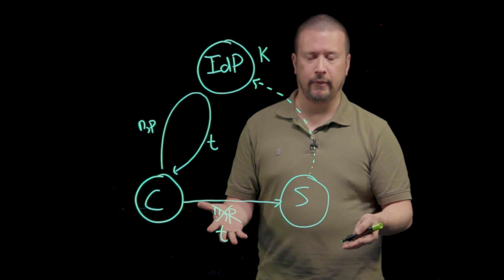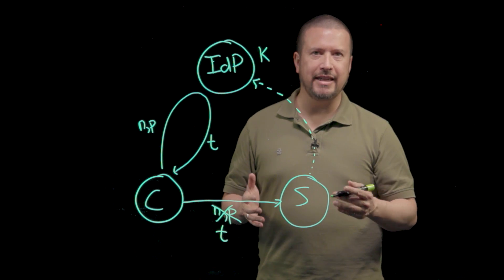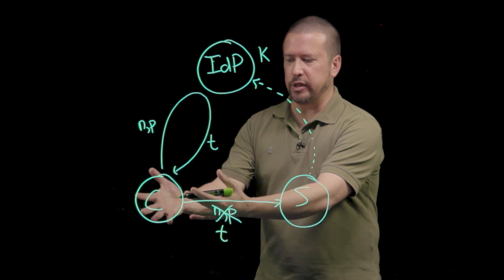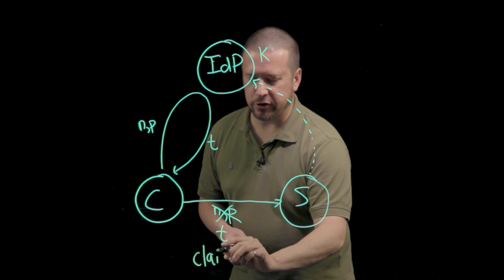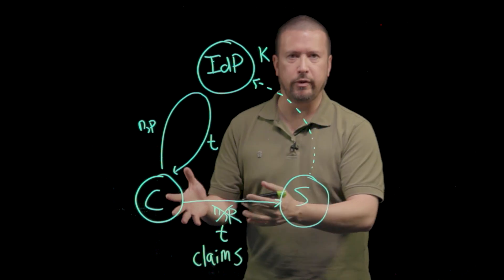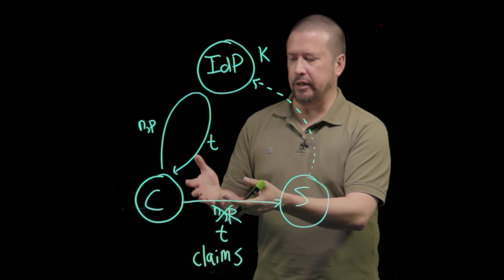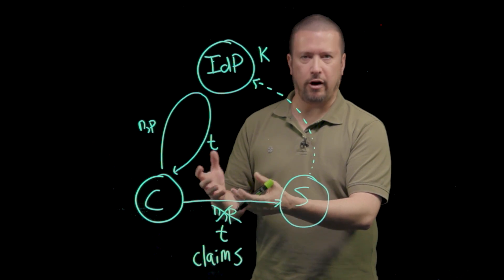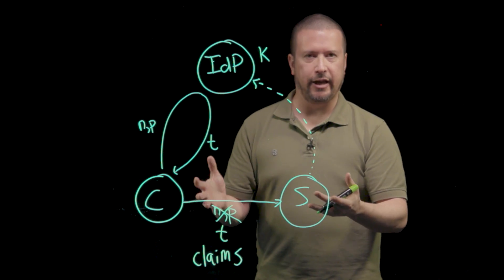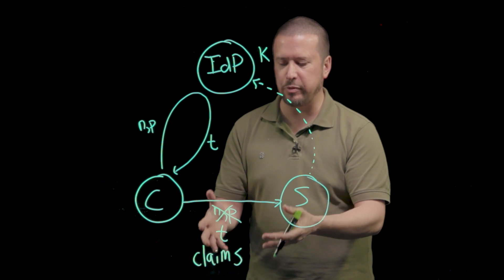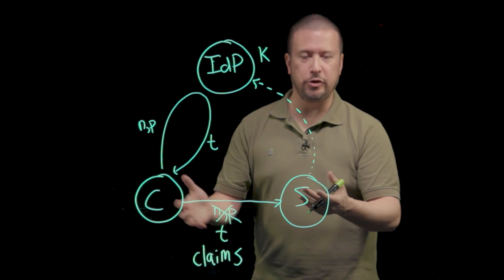So actually what is a token? A token is a signed document, a cryptographically signed document. And it contains these things about the person using the client that are called claims. And claims are simply information about that identity that's calling the server. And it doesn't actually have to be a person. It could be a device. It could be a software process. Any of these things are an identity that might be acting at the server. So claims are just attribute value pairs that are information about the identity that's using the service.